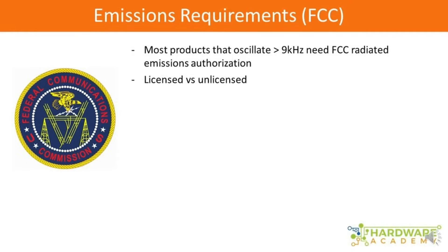Unlicensed products include all the wireless devices that all of us use every day — whether that be Wi-Fi, Bluetooth, or cellular. These are all different wireless forms of communication that are unlicensed. We don't have to have a special license to use a Bluetooth product. That's what we're going to focus on, because licensed products tend to have an entirely different set of requirements regarding emissions, and the FCC has a completely different section of the code for licensed versus unlicensed products.